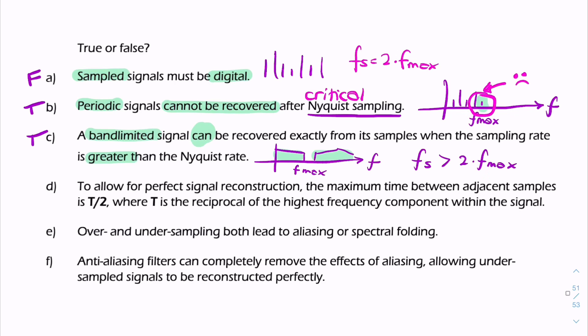Statement d: to allow for perfect reconstruction, the maximum time between adjacent samples is t over 2, where t is the reciprocal of the highest frequency. So they're saying t is 1 over f max, and the maximum time between samples, samples can't be further apart than half t. And that's absolutely correct.